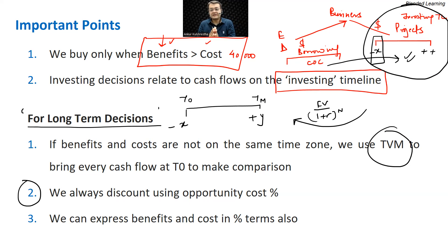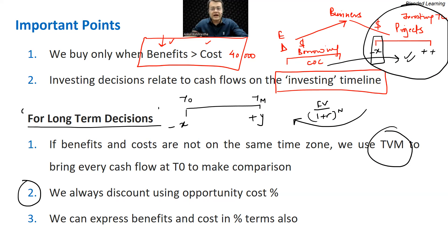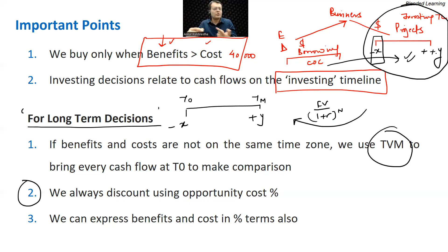Sometimes we say that all these long-term decisions are full of risk, because anything can change. Today I think I will invest X rupees and get Y rupees after three years. Tomorrow, perhaps this Y number can be much smaller. There could be a COVID, a demonetization, an interest rate change, an oil price fluctuation, or a competitor coming up. That's the risk a business takes, and therefore we say risk and return go hand in hand.